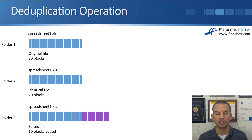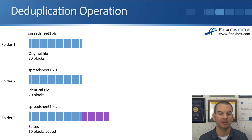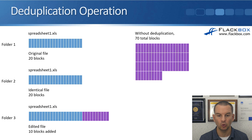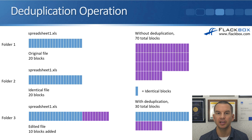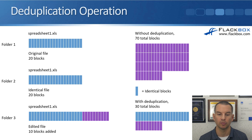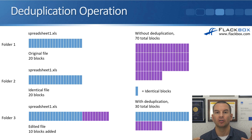The user in the third folder makes an edit, adding 10 more blocks. So we have the original 20 blocks times three — 60 blocks — plus the extra 10 blocks in folder three, totaling 70 blocks of actual physical space on disk without deduplication. The identical blocks are shown in blue. If we enable deduplication, duplicate copies are removed, replaced with pointers, keeping only the first copy. We end up with one copy of those 20 duplicate blocks plus 10 added blocks — just 30 blocks on disk rather than 70, while everything still looks the same logically.